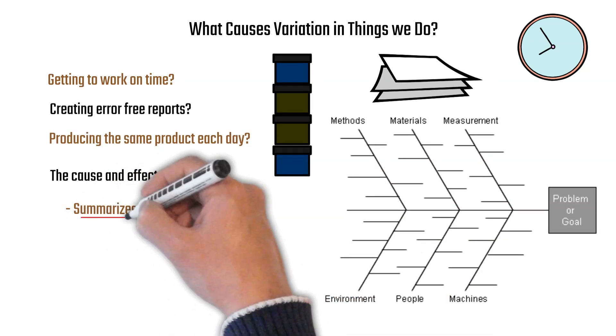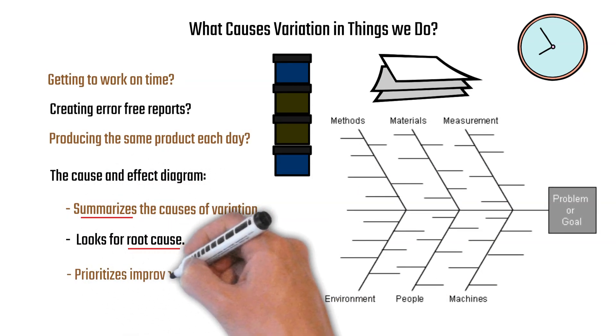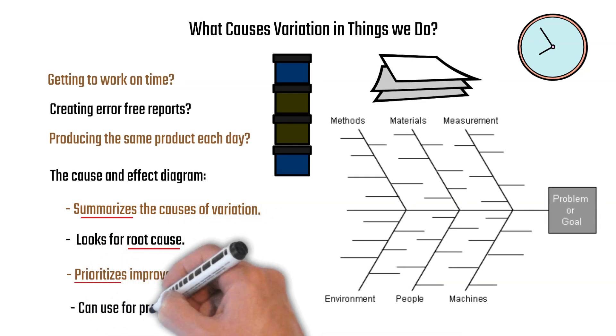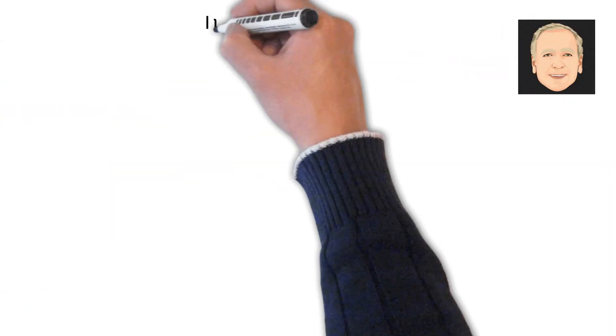It summarizes the causes of variation and helps look for root causes of the effect, the problem or the goal. And it helps us prioritize improvement initiatives. So it can be used on a problem or a goal, as we will see.